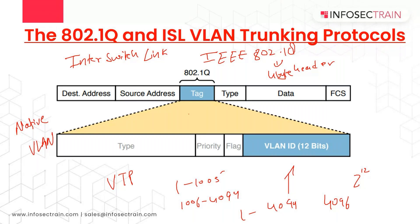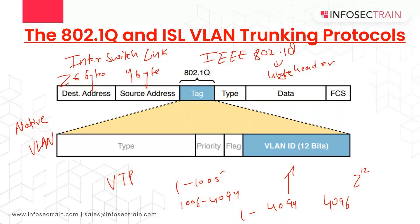Comparing ISL to 802.1Q: 802.1Q adds a 4-byte header, while ISL adds 26 bytes of header and a 4-byte trailer or footer — making it much heavier. ISL was created by Cisco for Cisco devices only.